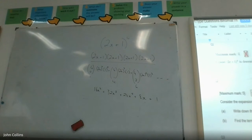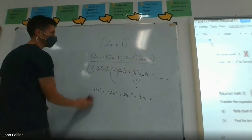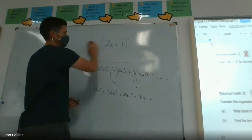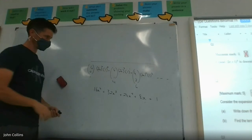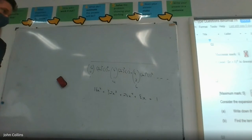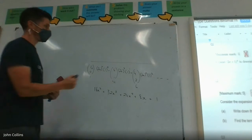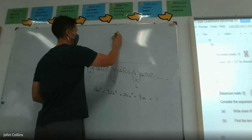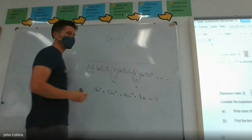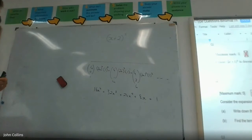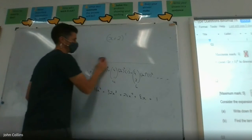All right, let's look at the second question, question two. Consider the expansion. First of all, hopefully it's an easy mark, the first one. So Julian, perhaps you can tell us, write down the number of terms in that expansion. Six, yeah. So that's the power of five, and then that means there's going to be six terms.